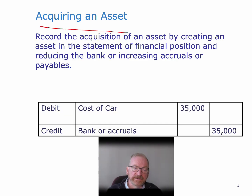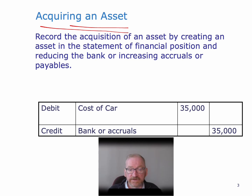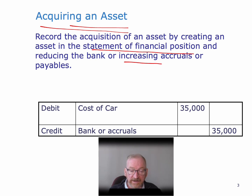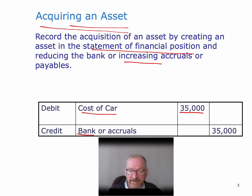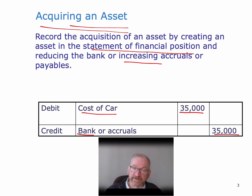When we acquire an asset, this is quite straightforward — we debit the cost of the asset to the asset account. We create an asset in the statement of financial position and we reduce the bank, or increase some kind of accrual or liability, for the amount that we owe for the asset. Supposing we buy a car for £35,000, we are going to debit the cost of the car and credit bank £35,000. That establishes the car asset on the balance sheet, and that's all we need to do when we acquire an asset initially.